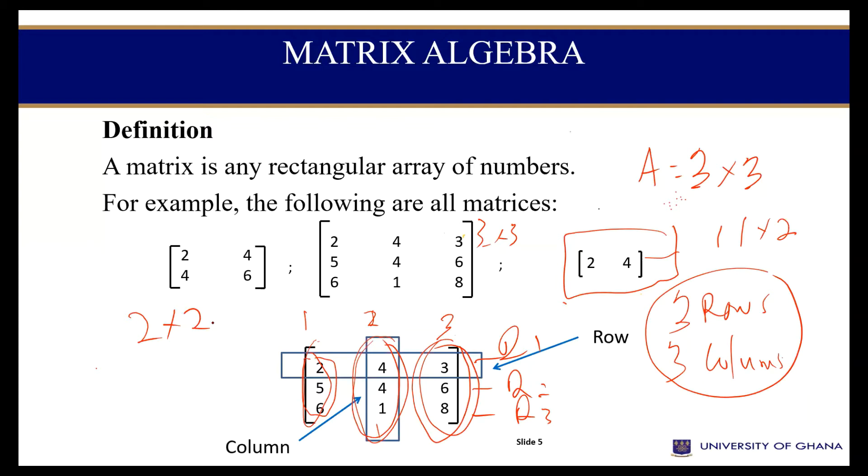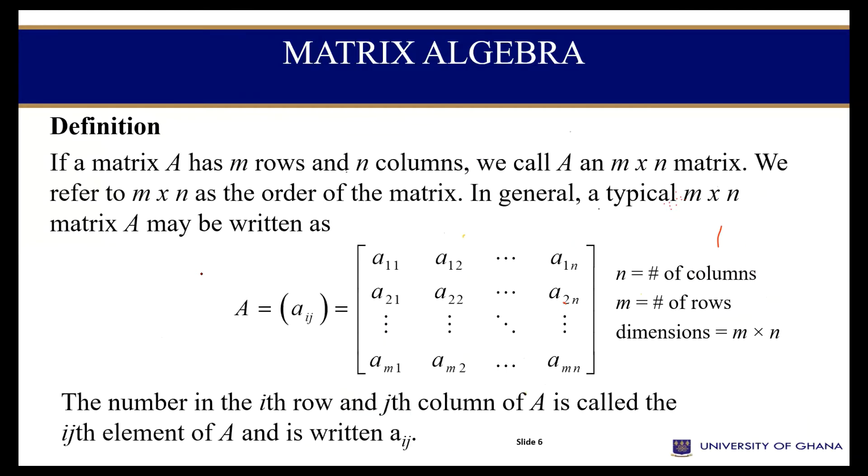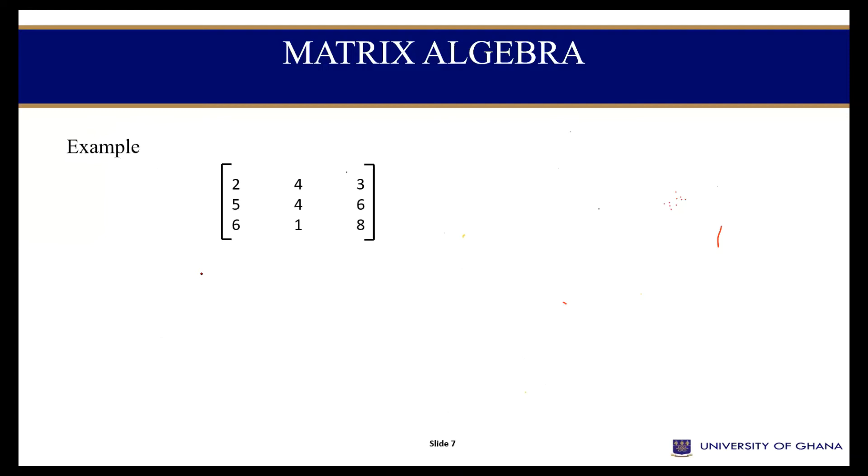So note that for every matrix that you draw or you write, you will be able first of all to define their dimensions. Then let me submit to you that every column has what we call elements. The elements are the numbers that you see being arranged. Each number or each element is in a row and at the same time, a column.